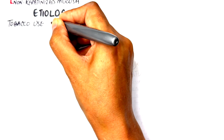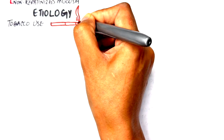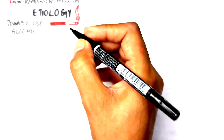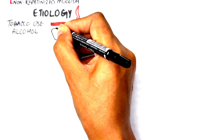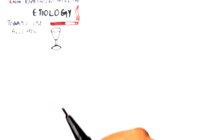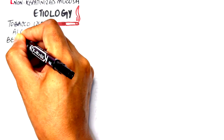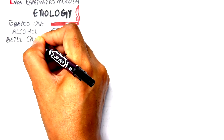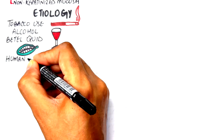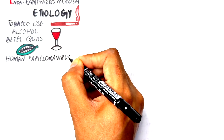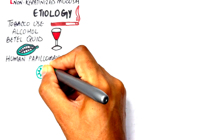Major contributors include tobacco use, which contains carcinogens like polycyclic aromatic hydrocarbons and tobacco-specific nitrosamines. Ethanol in alcohol increases mucosal permeability to carcinogens. Betel quid contains nitrosamines and arecoline that promote mutagenesis. Human papillomavirus, especially type 16, contributes to genetic alterations in oral epithelial cells.